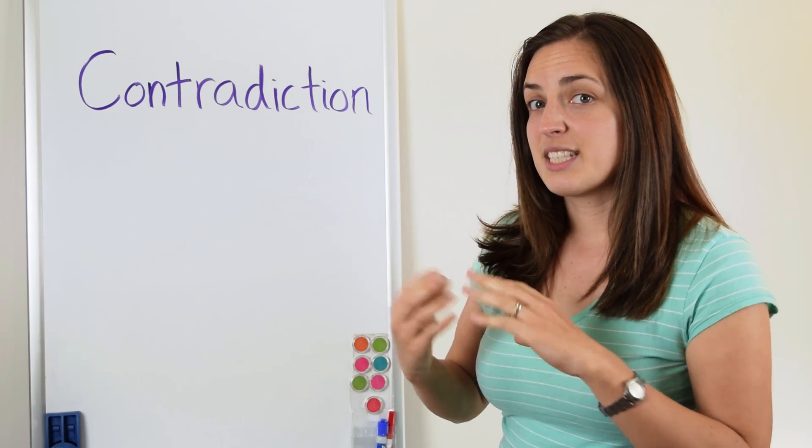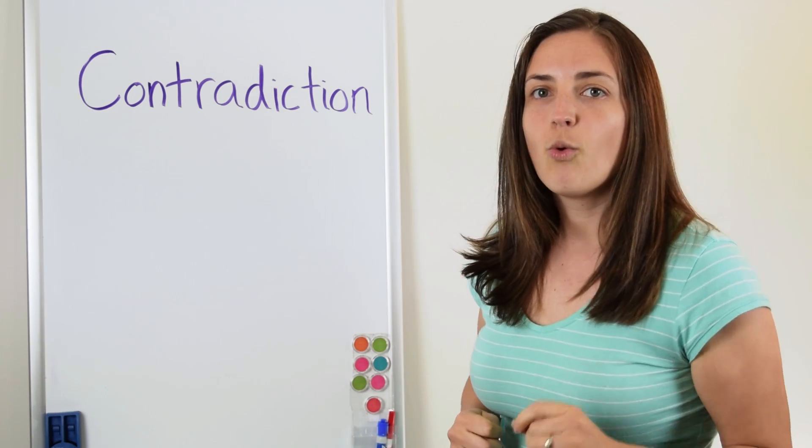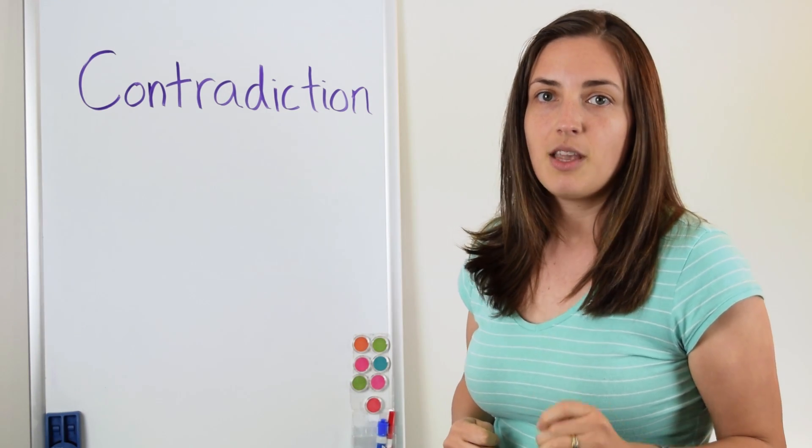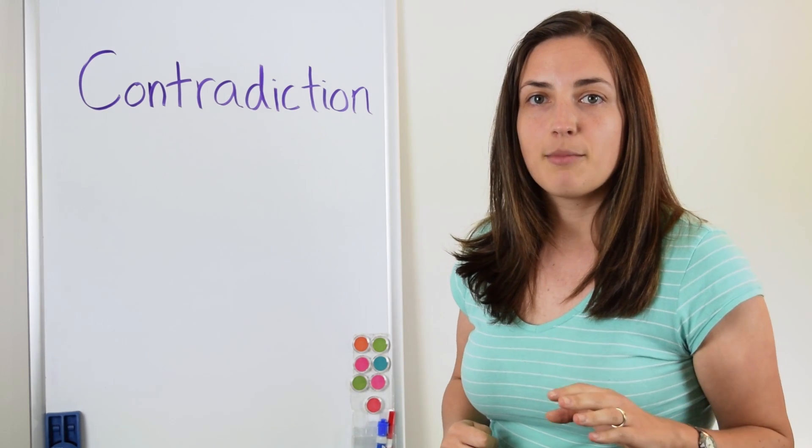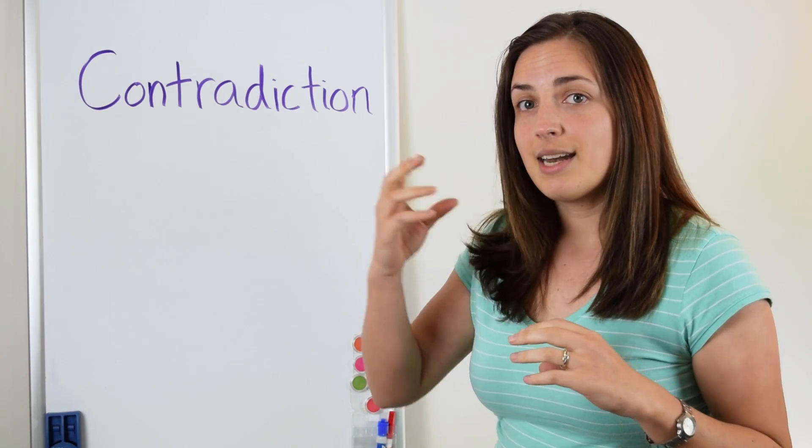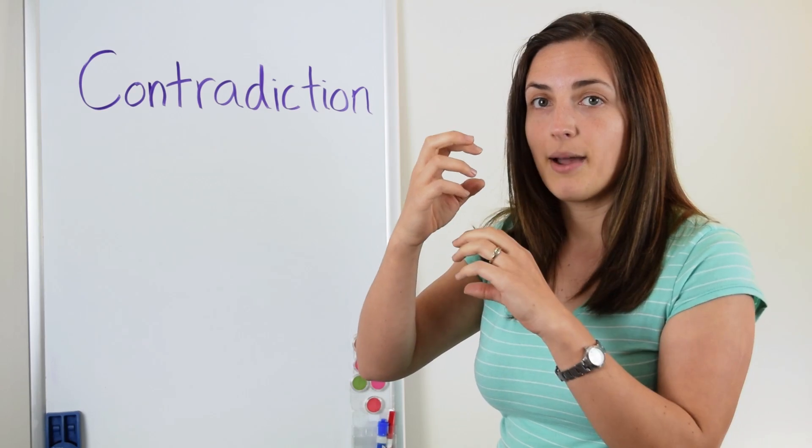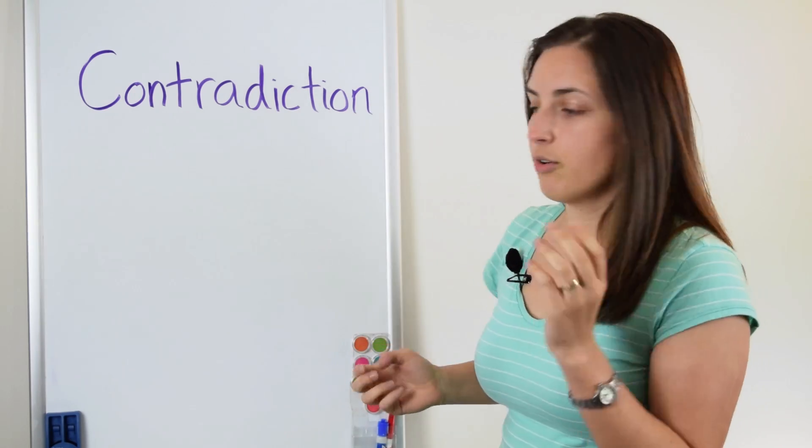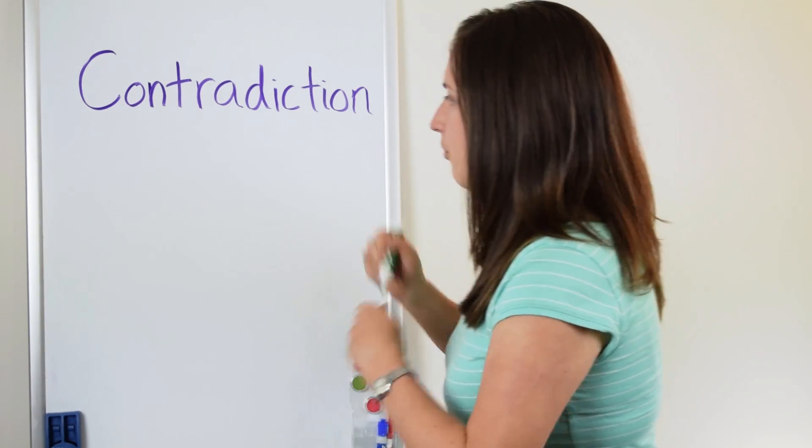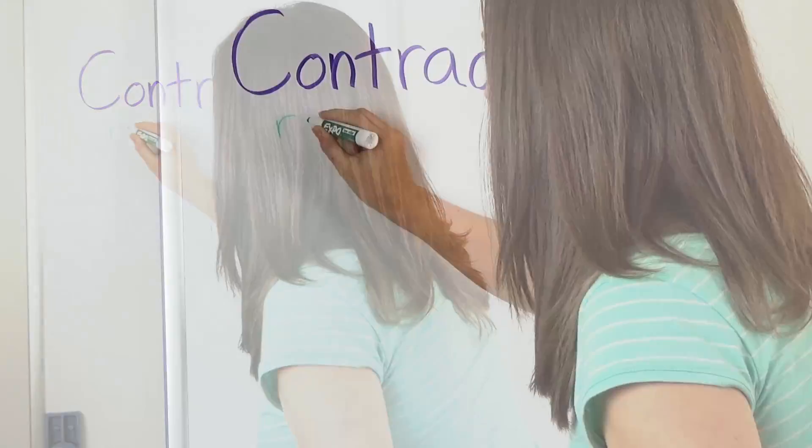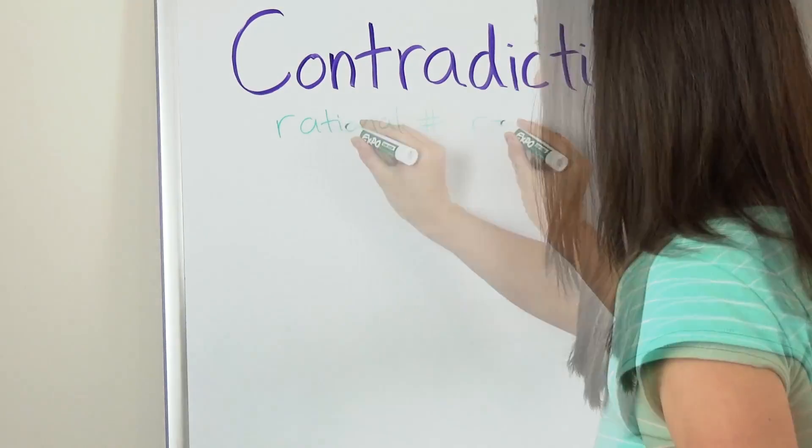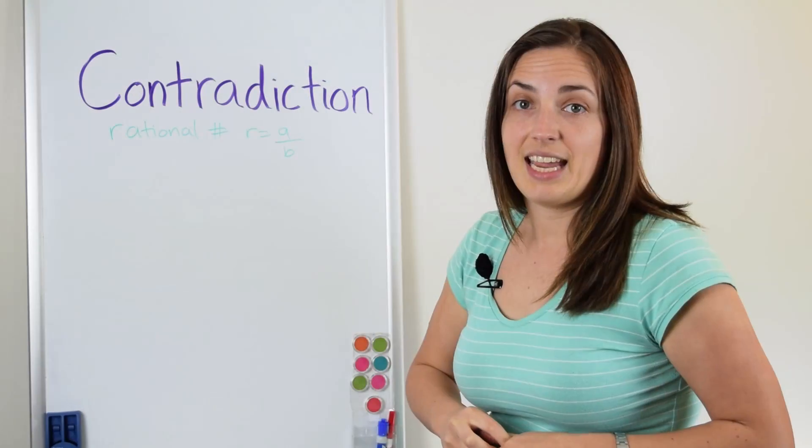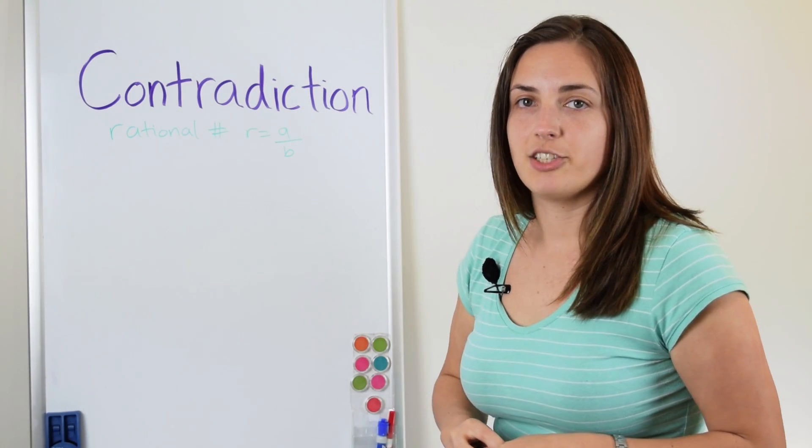So first of all, in order to explain what I'm going to prove, you need to know what a rational number is. Remember that a rational number is any number that can be written as a fraction of an integer divided by another integer. So let's write down what this is. Rational numbers are things that can be written down as a ratio, like a divided by b, where a and b are integers.